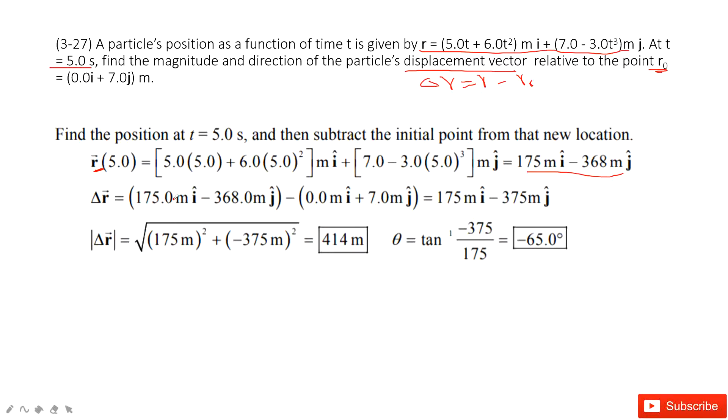From the final position, subtract the initial position. We get the vector in two components: i-component and j-component. Then we solve this vector. It's very easy to find its magnitude and direction.